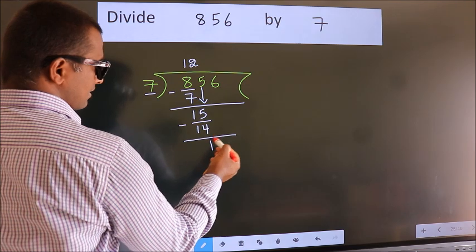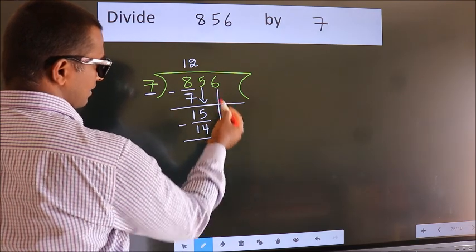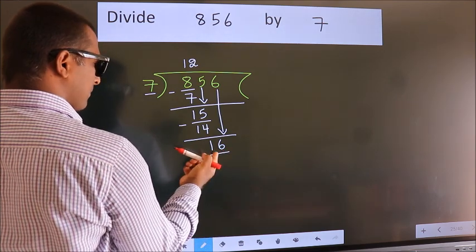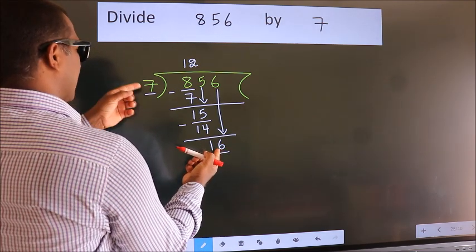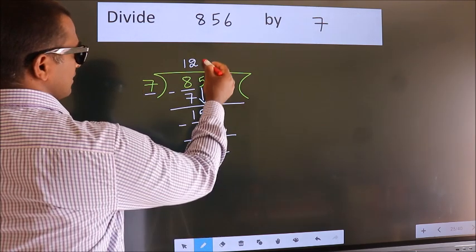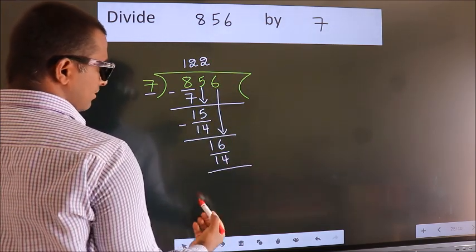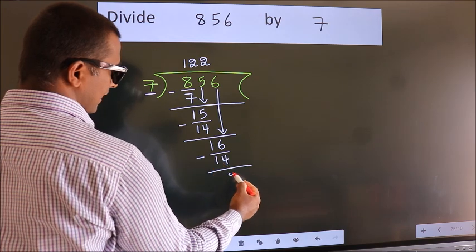After this, bring down the next number. So, 6 down. So 16. A number close to 16 in the 7 times table is 7 twos, which is 14. Now we subtract. We get 2.